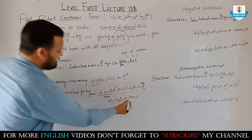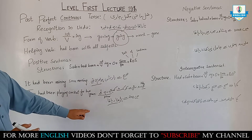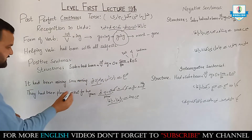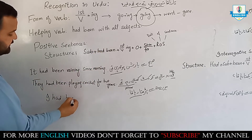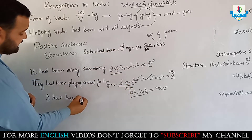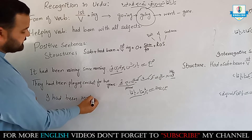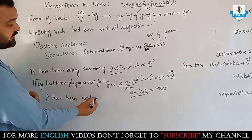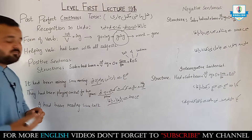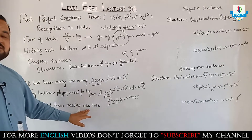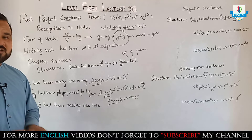Third sentence: 'Main 2012 se padh-ta raha tha.' The ending 'ta raha tha' tells us this belongs to past perfect continuous tense. Subject is 'I'. The sentence becomes: I had been reading since 2012. I use 'since' because 2012 is a known, specific time. If it were 'two years' or 'three years', that would be unknown time and we would use 'for'.